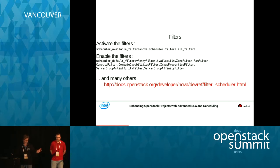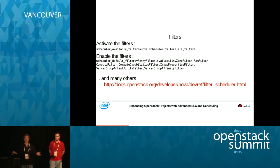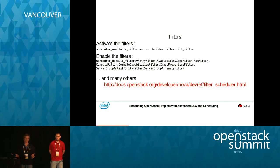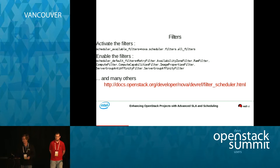There are multiple filters available, utilized in sequence, one after the other, from the set that you choose. You have to tell the scheduler where to find its filters — basically a directory somewhere containing all the filters — and then you enable which filters you want to use in your environment. For example, you could first try the retry filter, then go through the availability zone filter, and so on. You don't have to use them all, but you'll probably need at least the retry filter. There's a URL where you can get more detailed information to examine at leisure.